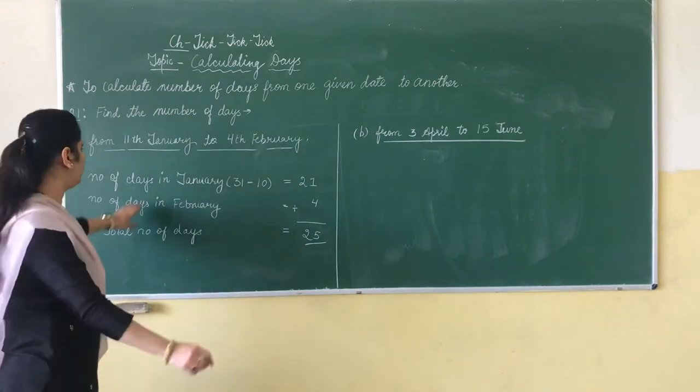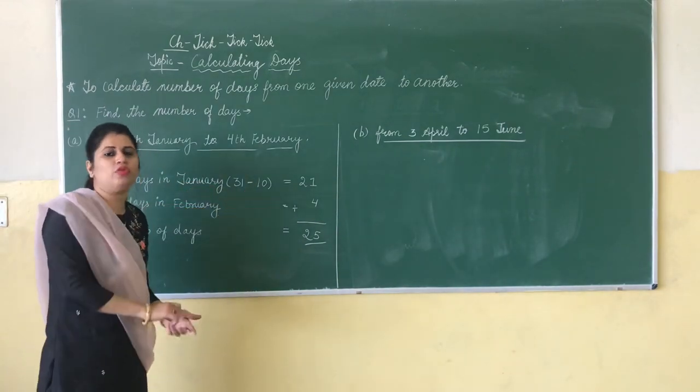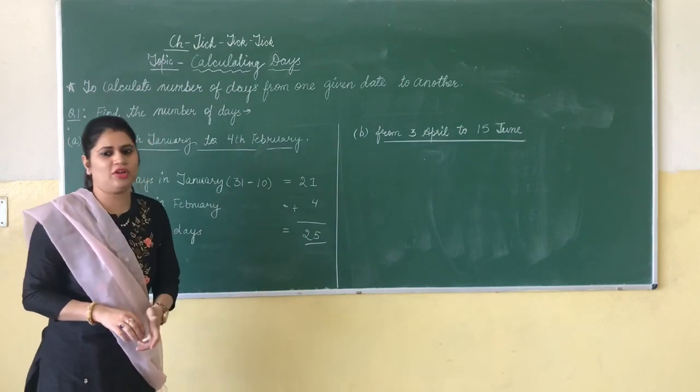So 25 number of days are from 11th January to 4th February. It is up to you if you want to do the subtraction method or if you want to count it on your fingers. Okay? That is up to you.